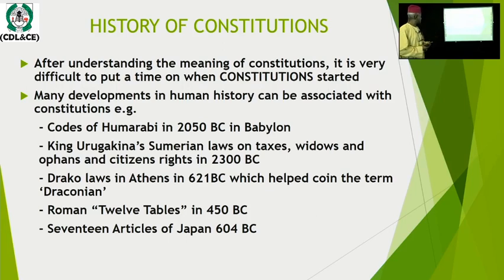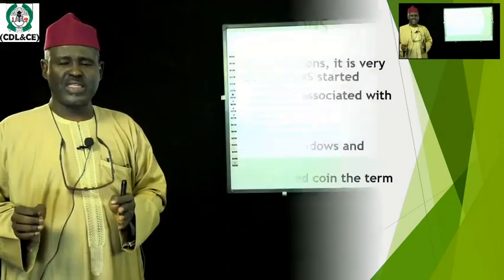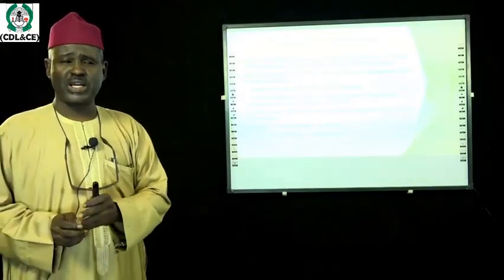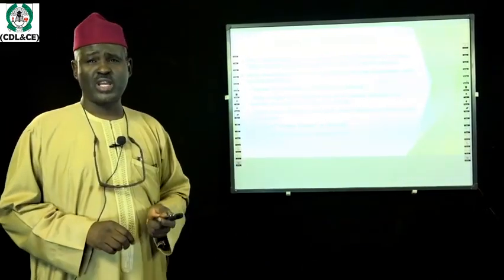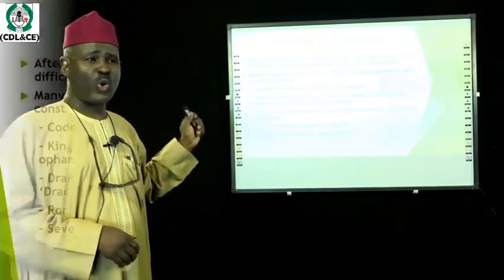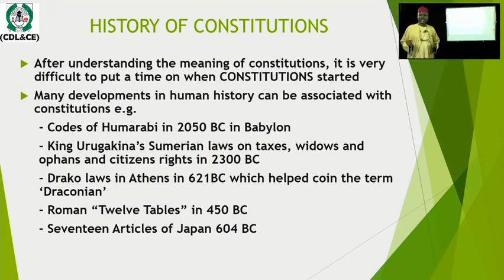In Athens, around 621 BC, the sovereigns created a law based on what they called the Draco laws. They were very stiff, strict laws, and because of that the people called them draconian laws. It is from that Draco law that the English word 'draconian' came into existence. Anything that is very demanding, stiff, and strict is referred to as a draconian affair.